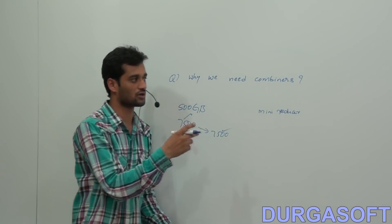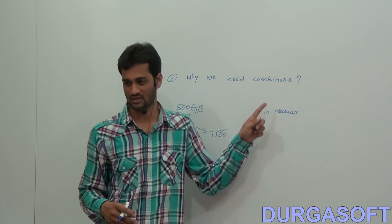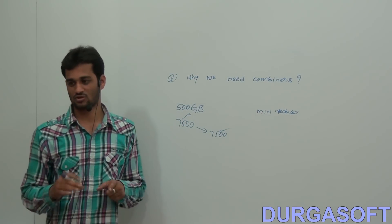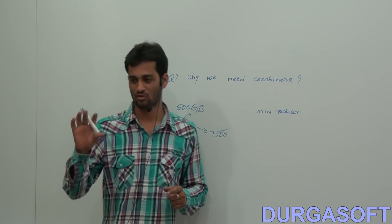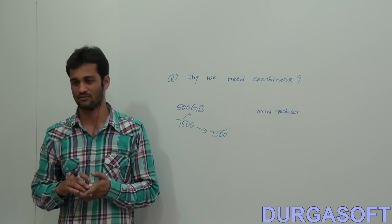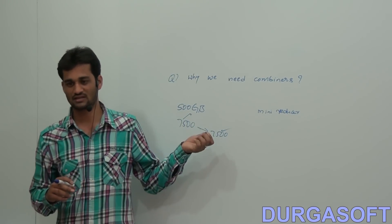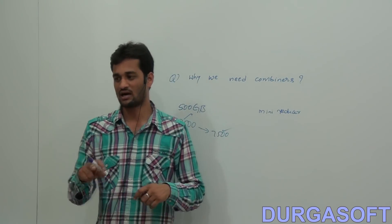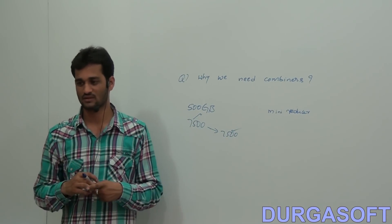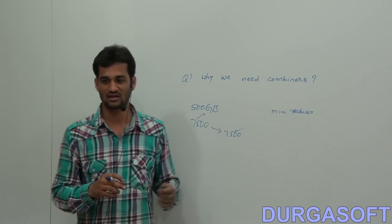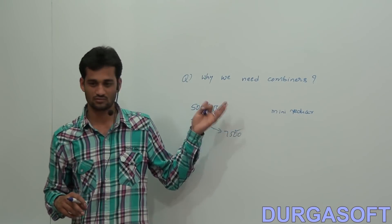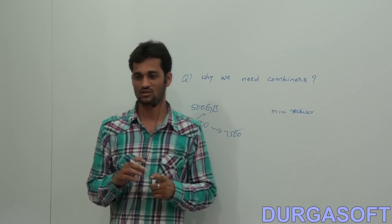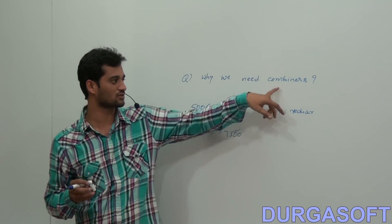Simply put, the code we write in the reducer will also be written in combiners. So however many mappers there are, that many combiners will be there. Each combiner works on its individual mapper output key-count value pairs, shuffles and sorts that data, and gives some output. All combiner outputs are again received by the reducer, which combines them and gives the final output. Because of this combiner, your network traffic will be less, so performance will be increased.